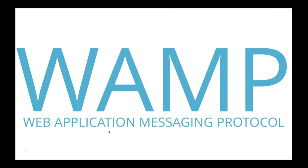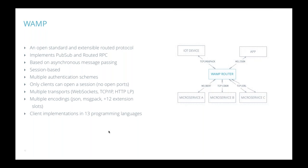WAMP stands for the Web Application Messaging Protocol. It is an open standard, extensible routed protocol implementing both pub/sub and routed RPC. It's based on asynchronous message passing, is session-based, allows multiple authentication schemes, multiple serializations, multiple transports, and is currently implemented in 13 programming languages. With a WAMP router, all microservices connect and create a session. Unlike a normal microservices architecture where an API gateway opens connections to back-end services, in this architecture the service connects to the router when it starts up and opens one or more connections, deciding to communicate via WebSockets or TCP with JSON or MessagePack serialization.